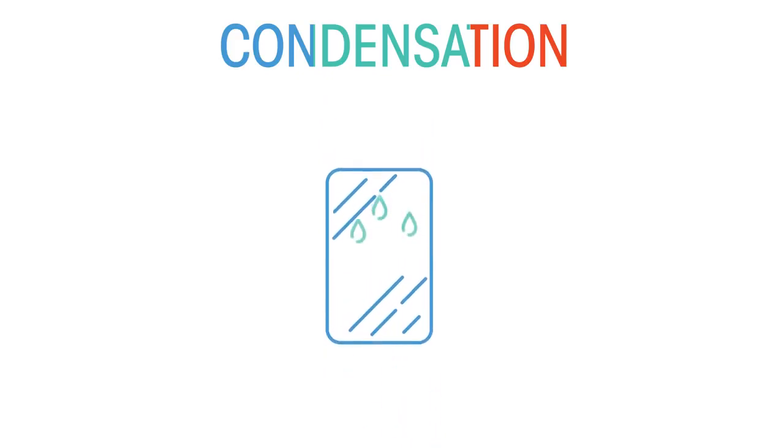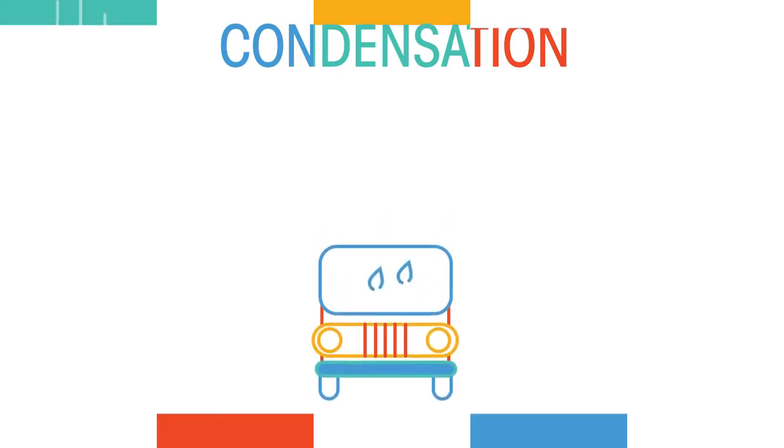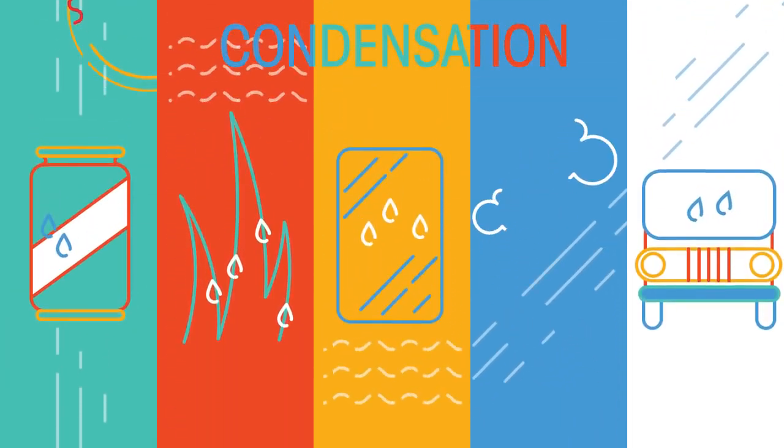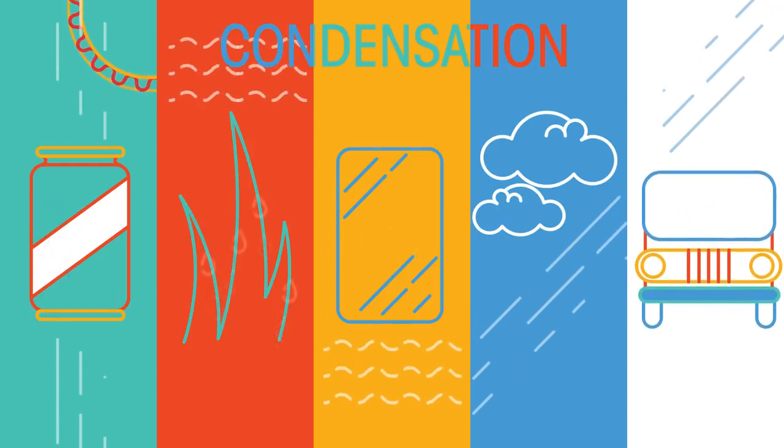or the steamed up mirror after a hot bath. Even the clouds in the sky, or a foggy windscreen in a car. These are all examples of condensation. Water vapor in the air has cooled down to form liquid droplets of water.